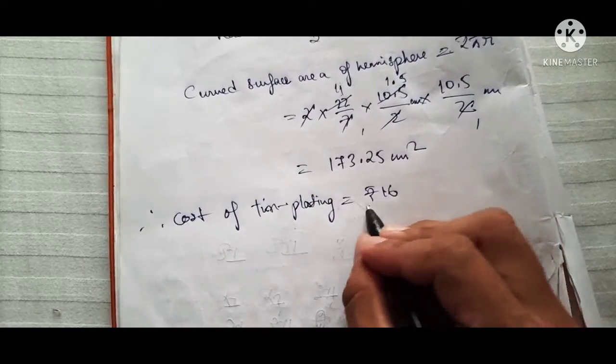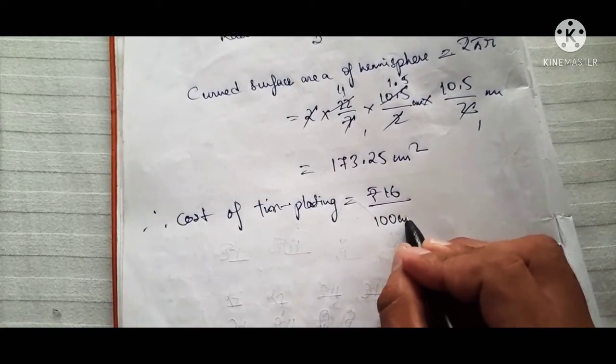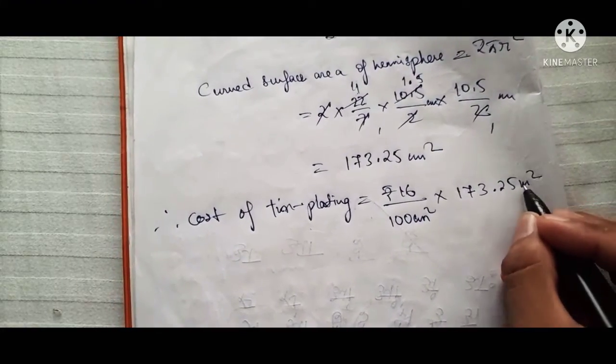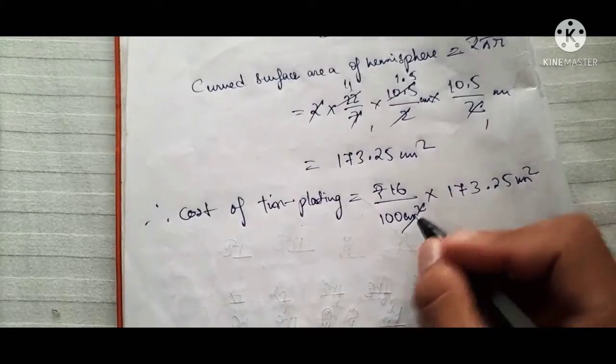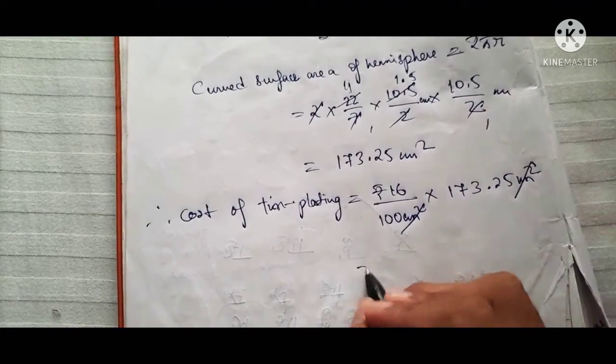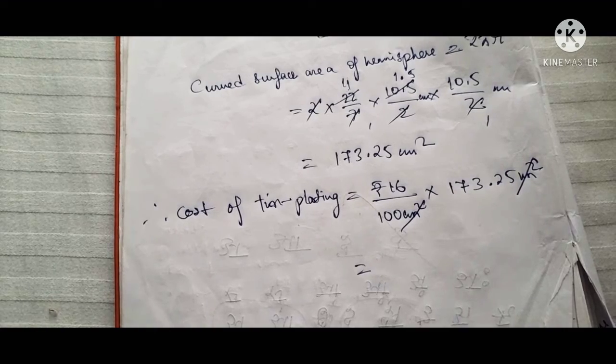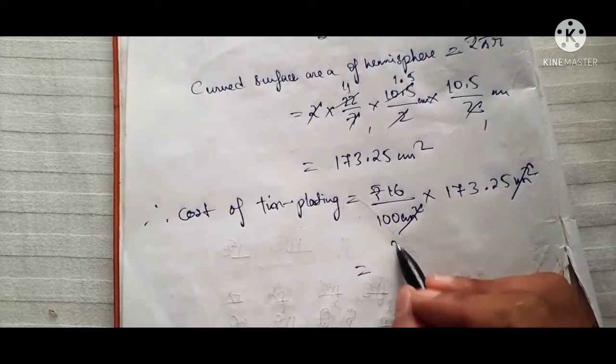16 per 100 centimeter square into the area we got here, 173.25 centimeter square. Okay, so centimeter square, centimeter square, you can cancel it. And 16 into 173.25, you will be getting here 2772.